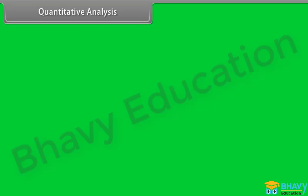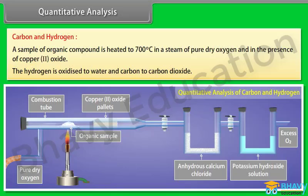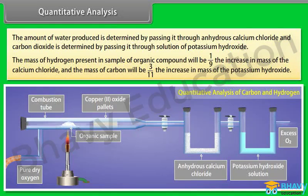Quantitative analysis — Carbon and Hydrogen: A sample of organic compound is heated to 700°C in a stream of pure dry oxygen in the presence of copper(II) oxide. The amount of water produced is determined by passing it through anhydrous calcium chloride, and carbon dioxide is determined by passing it through potassium hydroxide solution. The mass of hydrogen present = (1/9) × increase in mass of calcium chloride. The mass of carbon present = (3/11) × increase in mass of potassium hydroxide.